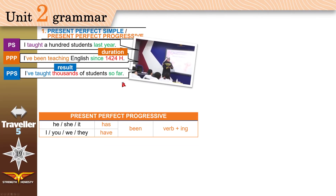To make a sentence in the Present Perfect Progressive, you use 'has' with he, she, and it. You can say 'He has been teaching' — verb plus -ing. To make it shorter: he's been, she's been. You use 'have' with I, you, we, and they: you've, I've, we've been teaching.